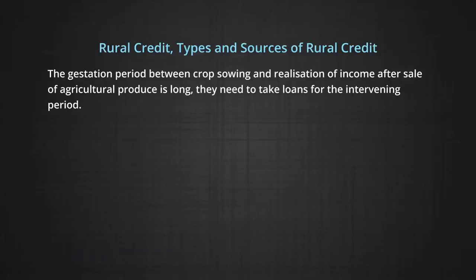The farmers require credit for various purposes: to buy additional land, implements and tools, fertilizers, and seeds. They also need to pay off old debt and personal expenses like marriage, death, religious ceremonies, etc. As the gestation period between crop sowing and realization of income after sale of agricultural produce is long, they need to take loans for the intervening period. Most farming families in India are small and marginal landholders, producing just enough for subsistence with no savings available for investment.